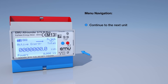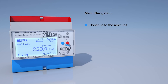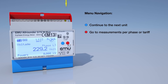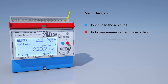Use the blue button to switch to the next unit such as power, current, or voltage. Use the red button to access the measurements per phase or tariff. Use the service button to start or exit the configuration.